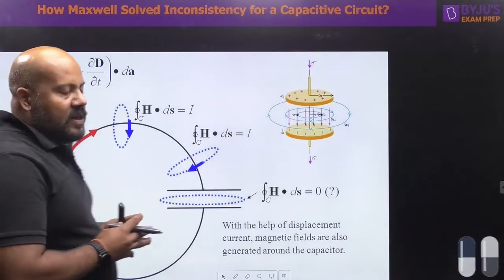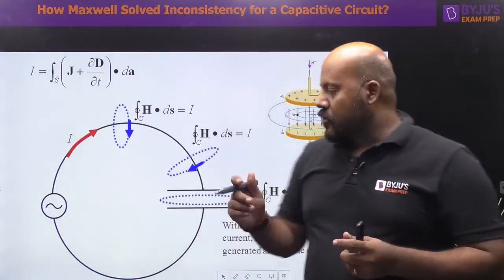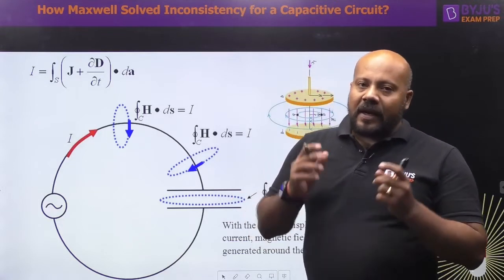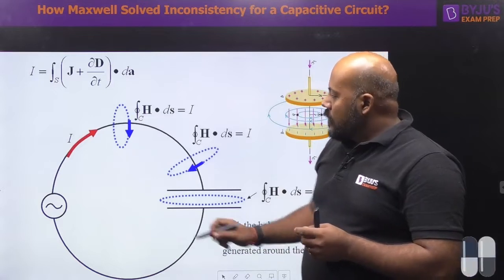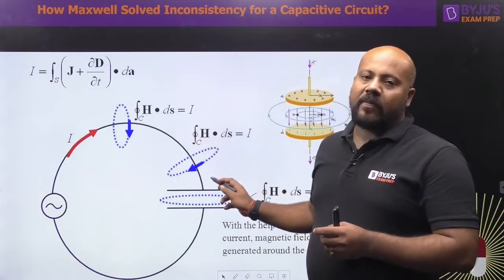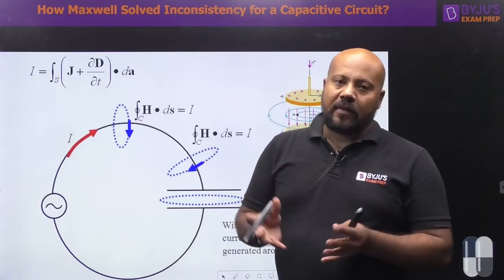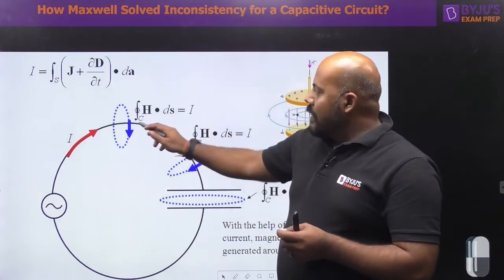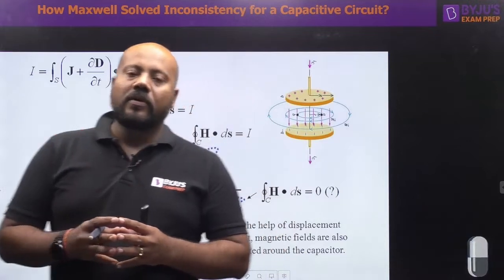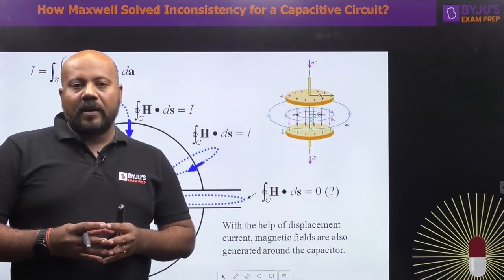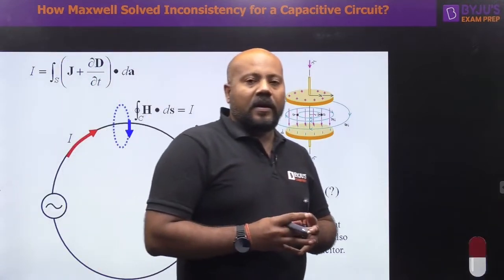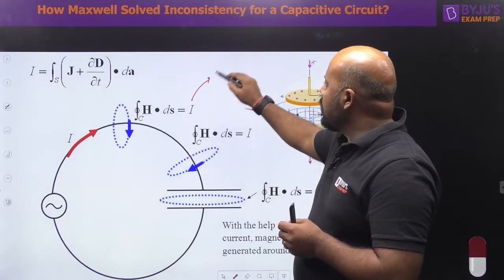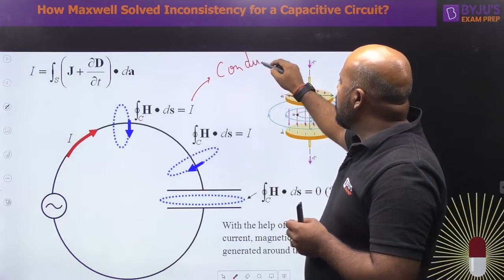If we talk about a capacitive circuit, suppose there is a source and a capacitor is connected in this circuit. If we try to apply Ampere's circuital law from the source to one plate of the capacitor, we can easily apply it from point to point and find that Ampere's circuital law gives you the total current enclosed. This current circulating in the loop or wire we are calling as the conduction current.